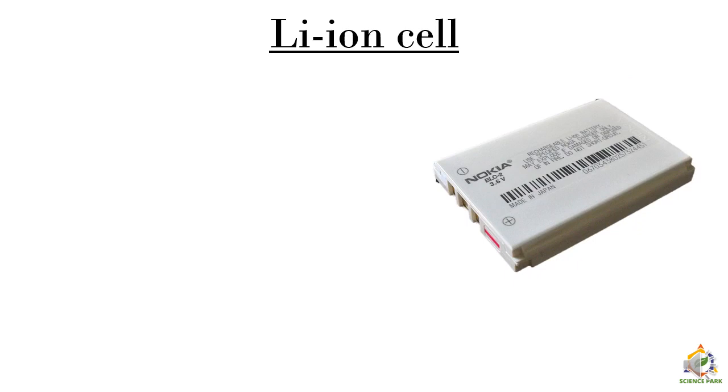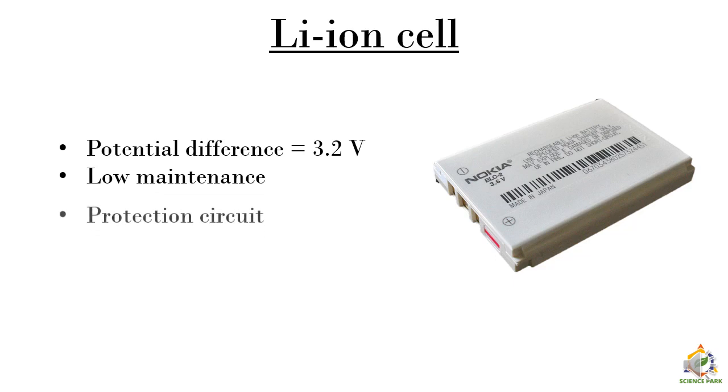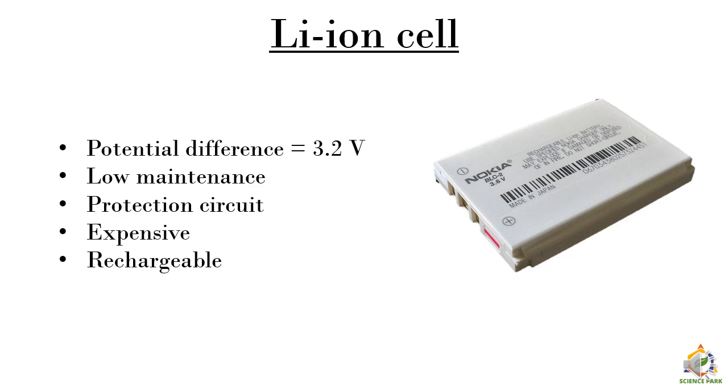This is the next kind of cell which is Li-ion cell or called as lithium ion cell. The potential difference we get is around 3.2 volts. These are low maintenance cell. We don't require much maintenance. But we need to use a protection circuit if we are using it in any instrument. It is quite expensive and rechargeable. Hence we use these kinds of cells in our mobile phones and also in notebook computers or laptops.